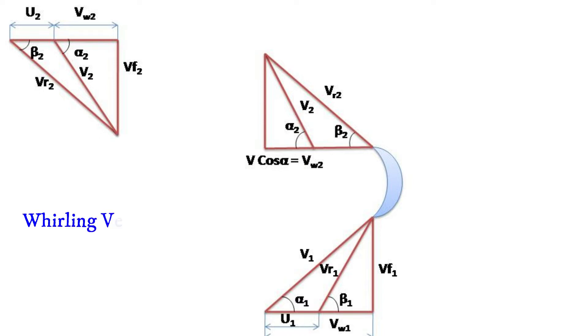This exit velocity v2 can be divided into two components of velocity. One is the horizontal component v·cos(α), which is also called as the whirling velocity vw2 at the outlet.